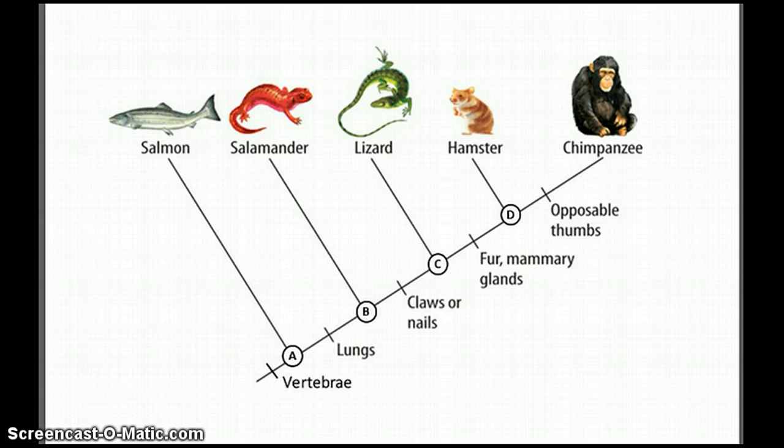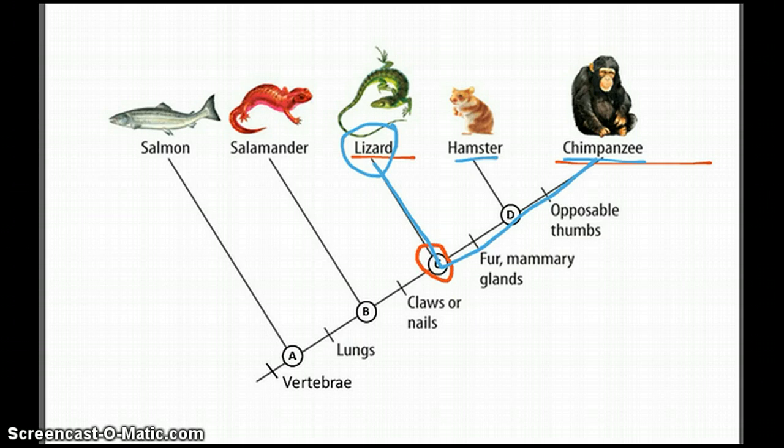Super important to understand is that what this tells you is that lizards and chimpanzees share that C common ancestor. Chimpanzees, and hamsters for that matter, did not evolve from lizards. They merely share a common ancestor way back in time.